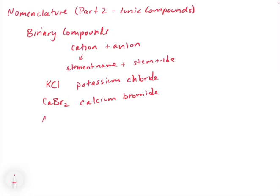Another example, a little bit more challenging one, Mg3N2. We have magnesium and then in this case, this would be nitrogen. So the stem is nit, and then we add ide to it. So we get magnesium nitride.